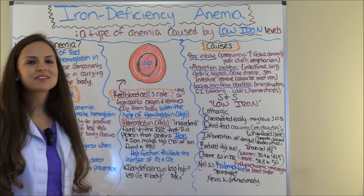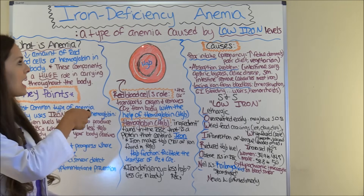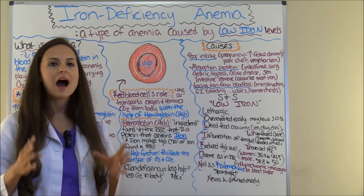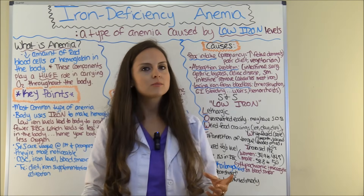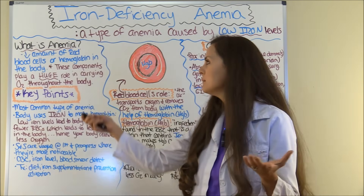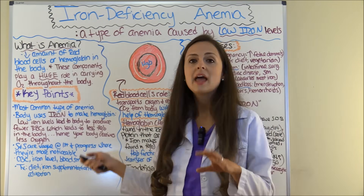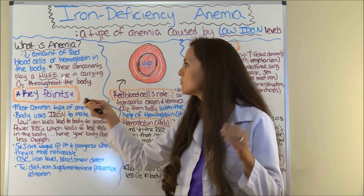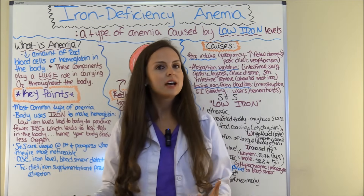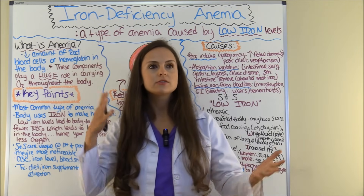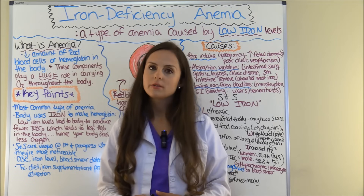Let's start out talking about the definition of iron deficiency anemia. This is a type of anemia caused by low iron levels. Anemia is the decreased amount of red blood cells or hemoglobin in the body, and these components play a huge role in carrying oxygen throughout your body. If you do not have enough of this, your tissues and organs are going to be deprived of oxygen, and depending on how severe this is, you'll start showing signs and symptoms.